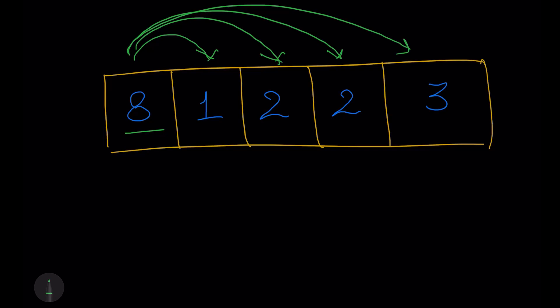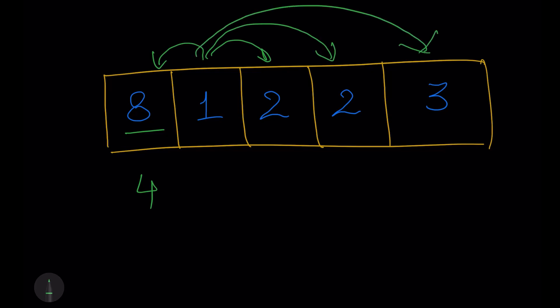So when we check this, for 8, we'll get there are four numbers which are less. So we'll return 4. Now for 1 when we check, we see that there are no numbers. So we'll return 0 and so on.